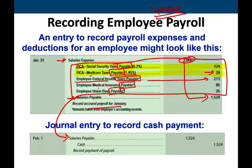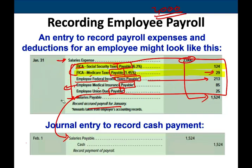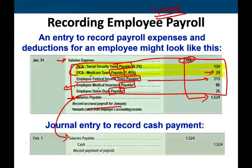All these withholdings are liabilities for the company. They must send the FICA money to Washington DC, the federal income tax to the federal government, the medical insurance to the insurance company (like Blue Cross Blue Shield), and the union dues to the union. Every time they make a payment, they debit the payable and credit the liability.